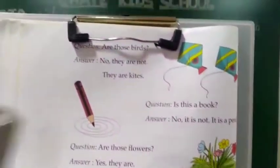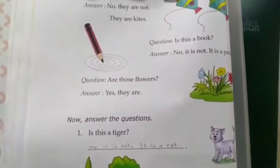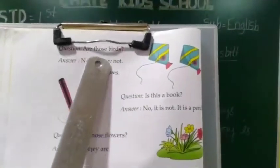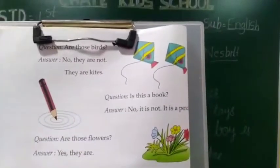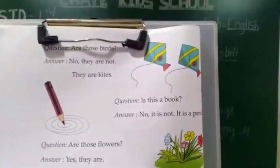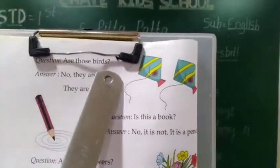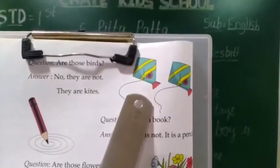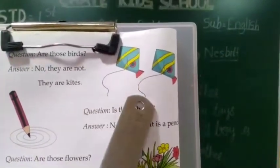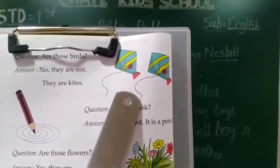Page number 36. Our question is: Are those birds? First, look at this picture. Which is this picture? Our question is: Are those birds? Are those birds, students? No, they are not birds. They are kites.